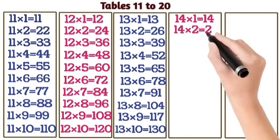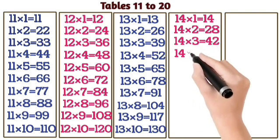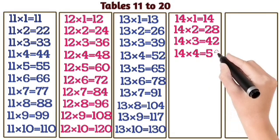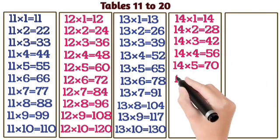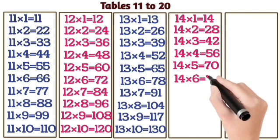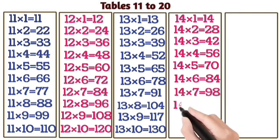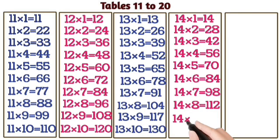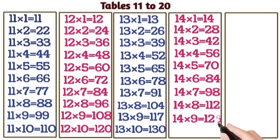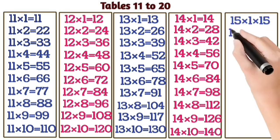14 ones are 14. 14 threes are 20. 14 threes are 42. 14 threes are 56. 14 fives are 70. 14 threes are 70. 14 sevens are 98. 14 eights are 112. 14 nines are 126. 14 tens are 140.